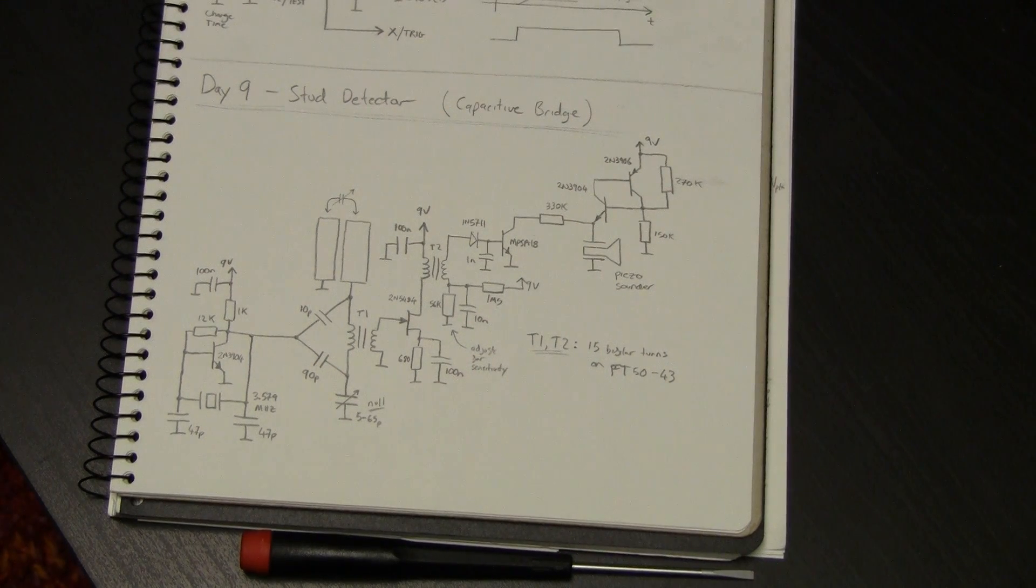G'day everyone, day 9, stud detector, aka capacitive nulling bridge. This is a simple, relatively simple circuit for measuring basically capacitance.